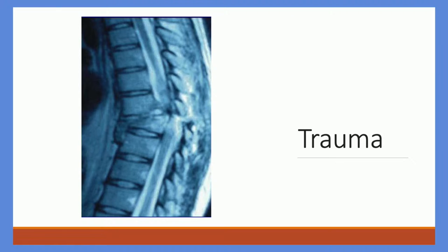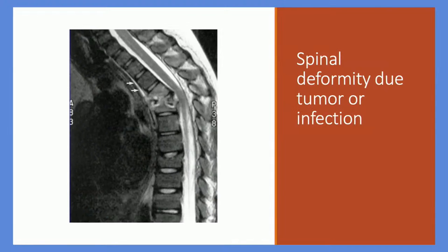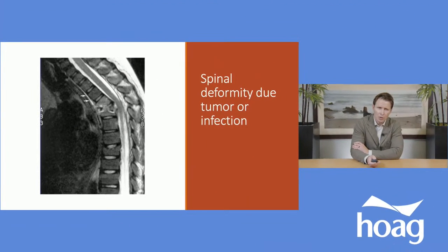Trauma, though not as common, can also contribute to deformity. This example shows a severe fracture that led to a spinal cord injury with kyphosis imparted from the traumatic event. Tumor and infection, also less common, can lead to significant deformity. This is an example of an infection that led to accelerated pathological fracture and kyphosis in the sagittal plane. Infections typically start from the disc spaces and spread elsewhere; tumors typically involve the bone and spread out from there.